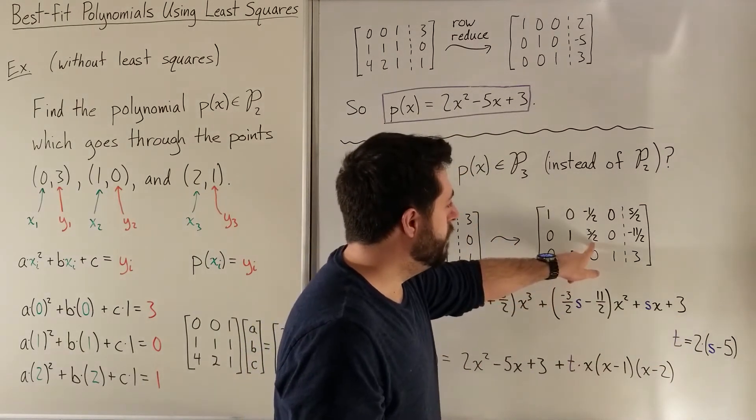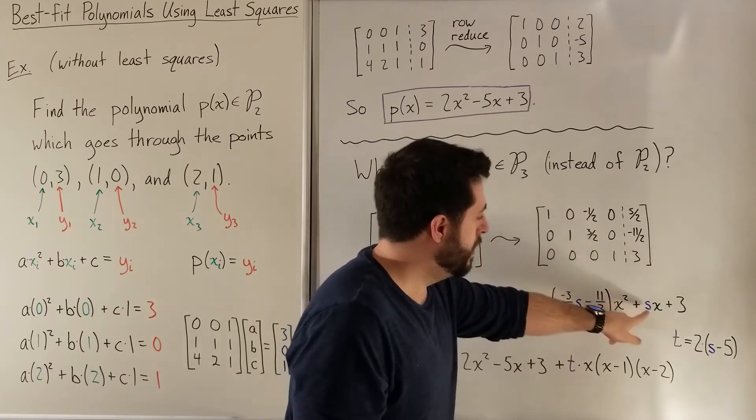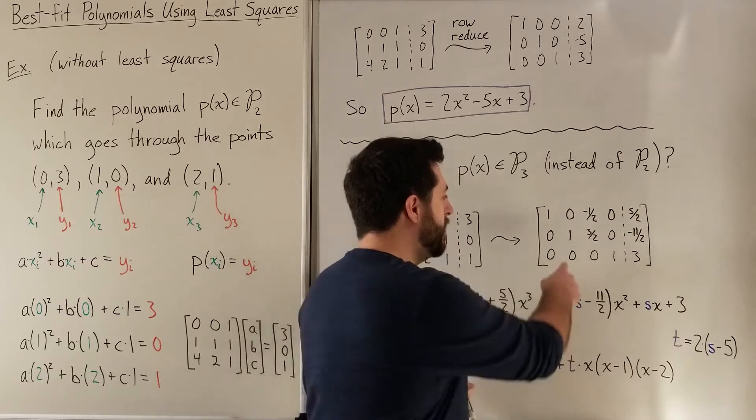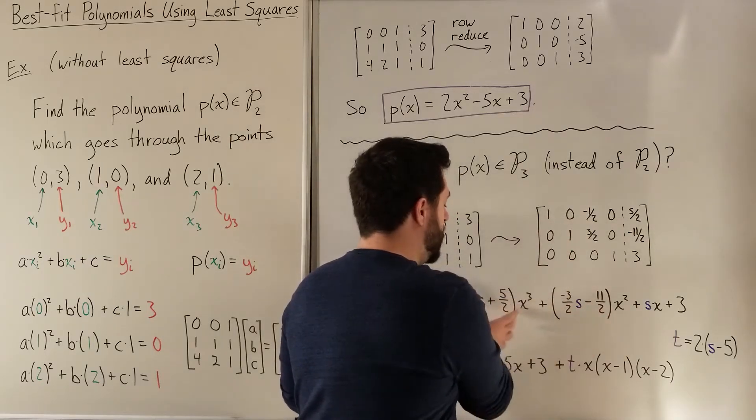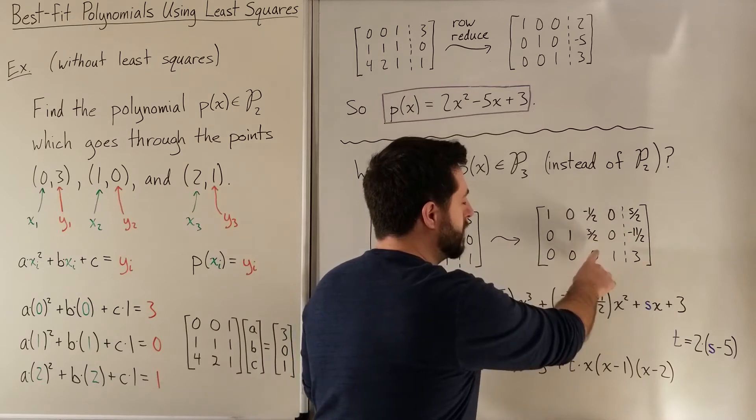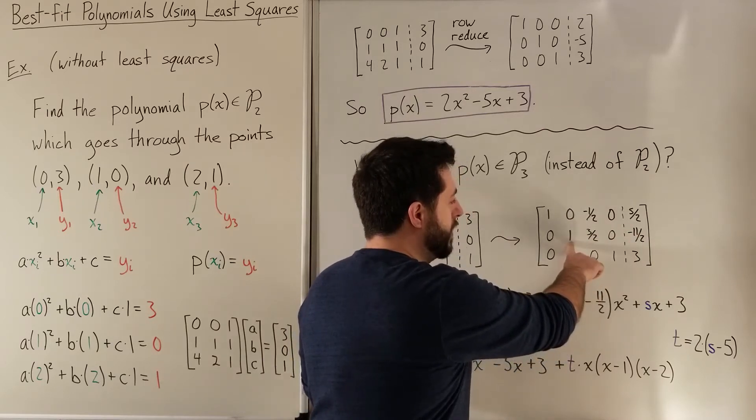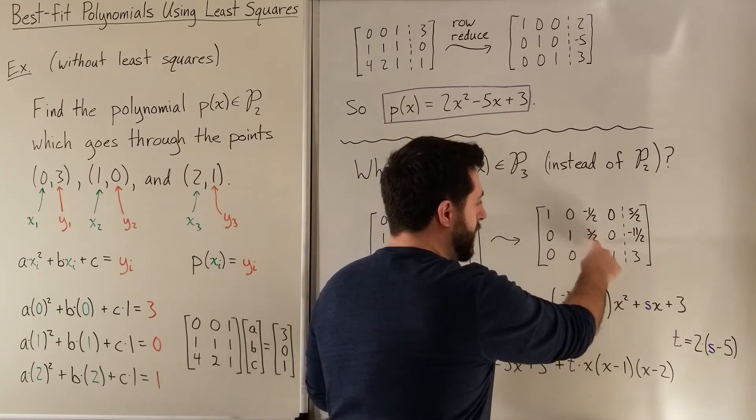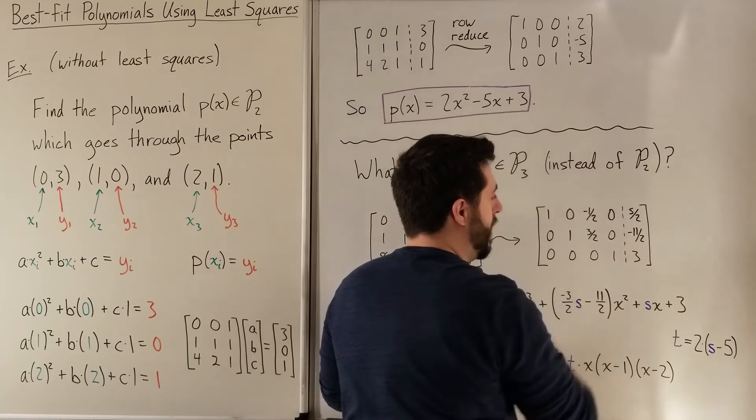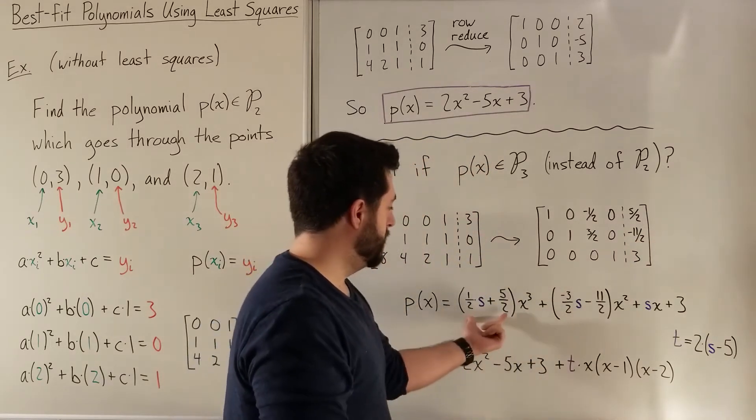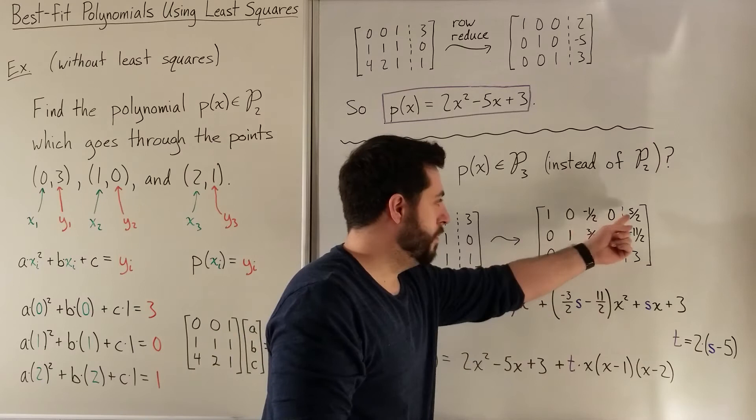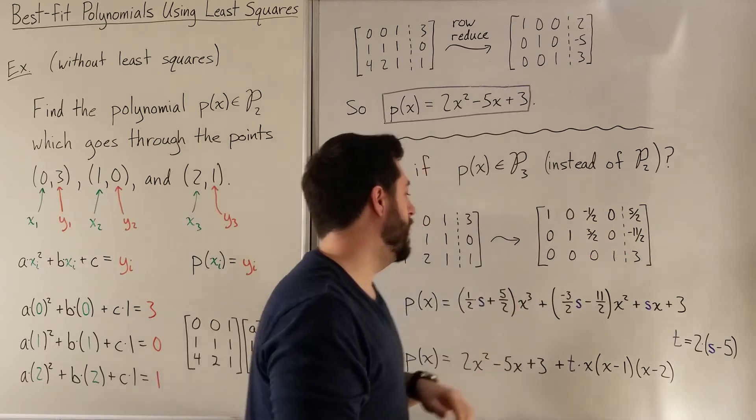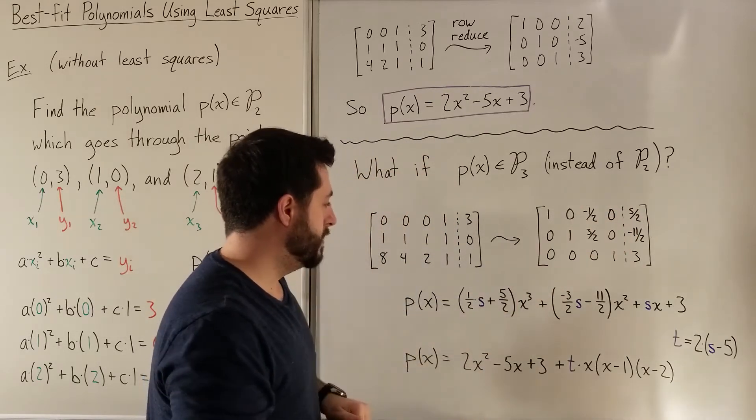But here if we let this variable be free, I'm going to call it s. So we have s*x. And then we can write these first two coefficients in terms of s just by moving this over to the other side. So the quadratic coefficient, coefficient of the x^2, is going to be -3/2*s and then -11/2. And similarly for this one, we move the 1/2 to the other side, we get this coefficient is 1/2 times this coefficient plus 5/2. Okay, so that's that there.